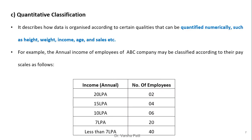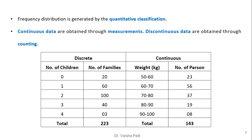Quantitative classification describes how data is organized according to certain qualities that can be quantified numerically, such as height, weight, income, age, and sales. For example, the annual income of employees of ABC Company may be classified according to their pay scale. This income variable is quantitative in nature, and the right-hand side shows the number of employees having that particular annual income.